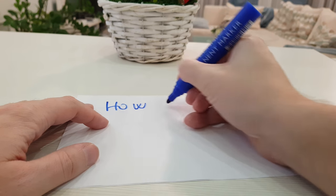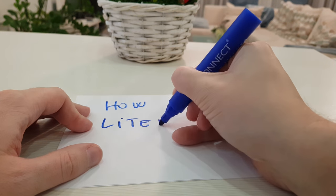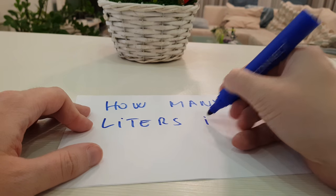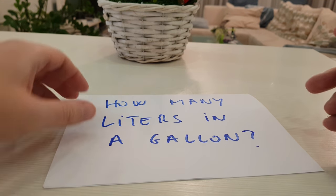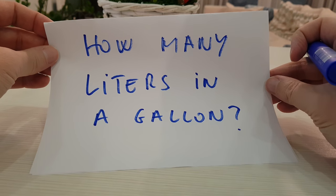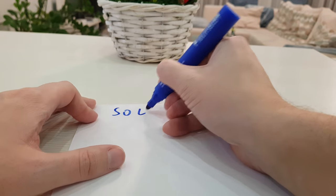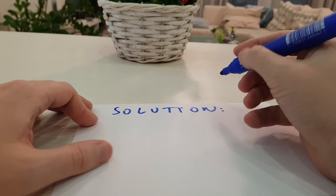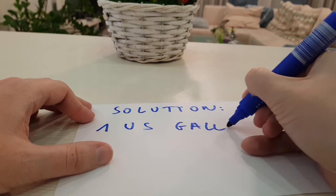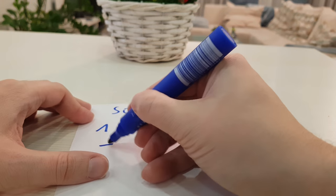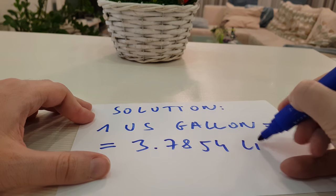In this video I will show you how many liters in a gallon. Here is a solution. One U.S. Gallon equals 3.7854 liters.